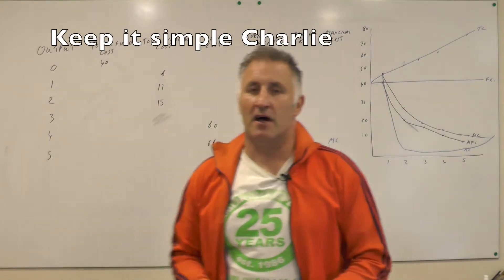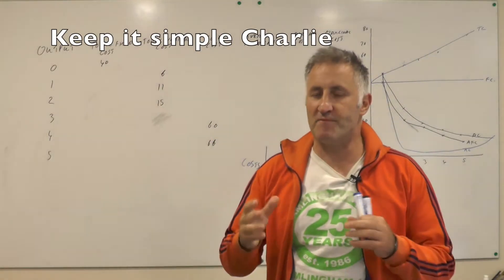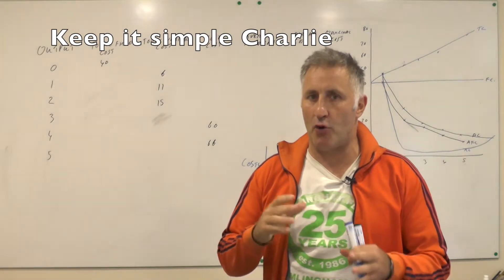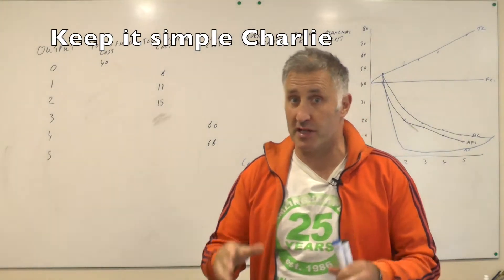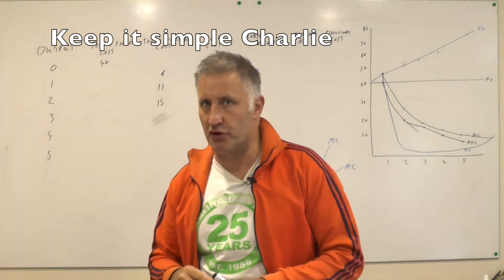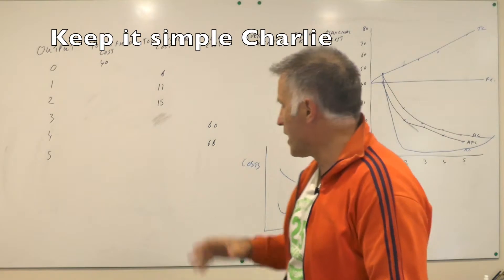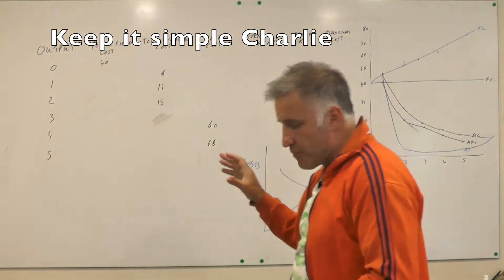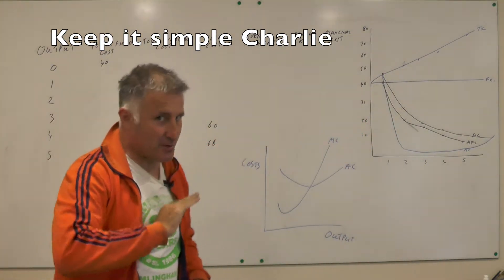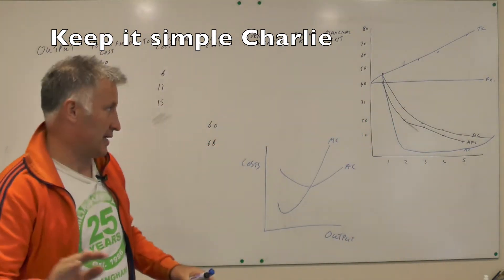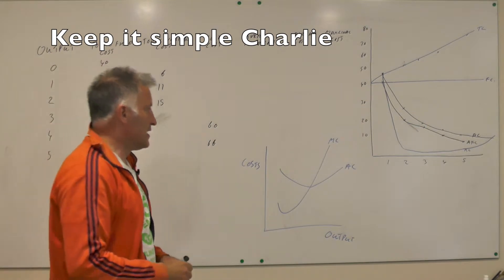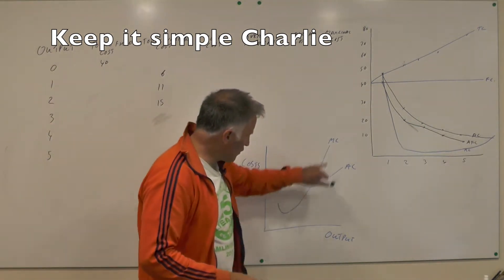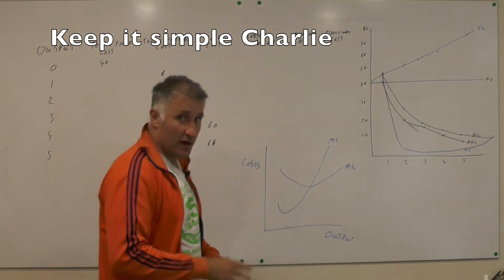This is cost curves. I've thought long and hard about how I'm going to deliver this lesson and about how all the cost curves work, and I've eventually decided to do it through a numerical example. But just to simplify it totally: the marginal cost curve will always go to the bottom of the average cost curve.